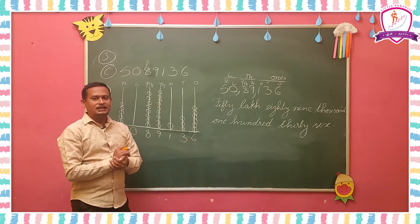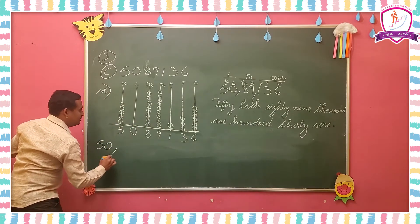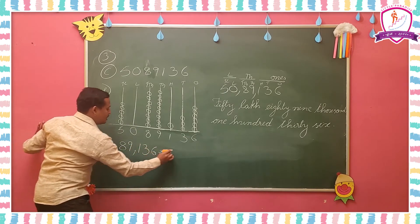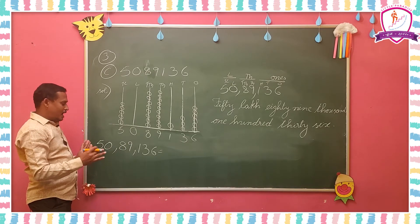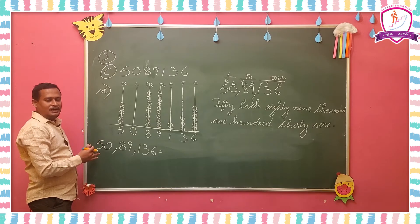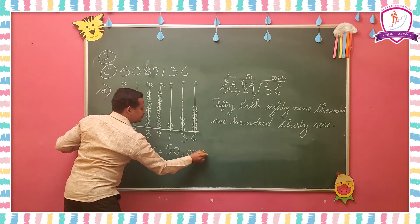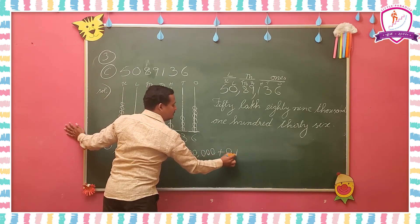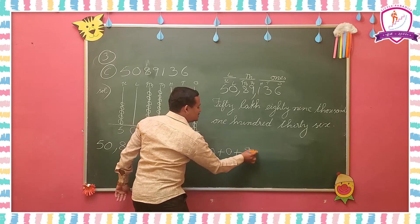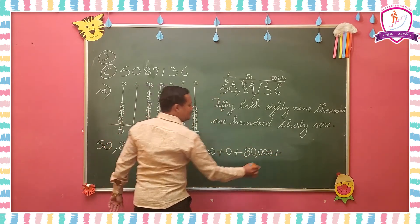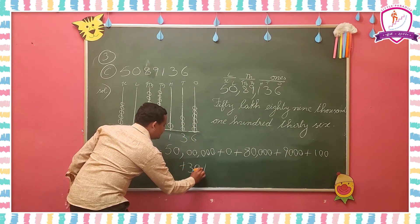Then go for the fourth one — write the expanded form for the number. For 50 lakhs 89,136, you have to write the place value for each and every digit and add them all. 5 in 10 lakhs place: write 50,00,000; 0 in lakhs: write 0; 8 in 10,000: write 80,000; 9 in 1000: write 9,000; 1 in 100: write 100; 3 in 10: write 30; 6 in 1: write 6. This is the expanded form.